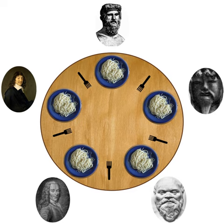Some of these models are based on message passing, while others have different mechanisms for concurrency. The proliferation of different models of concurrency has motivated some researchers to develop ways to unify these different theoretical models. For example, Lee and Sangiovanni-Vincentelli have demonstrated that a so-called tagged signal model can be used to provide a common framework for defining the denotational semantics of a variety of different models of concurrency, while Nielsen, Sassoni, and Winskell have demonstrated that category theory can be used to provide a similar unified understanding of different models.